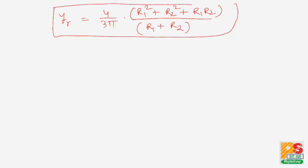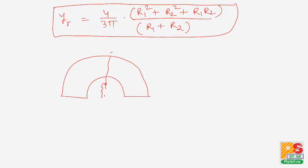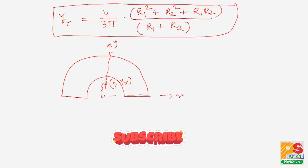That is the answer — the same answer as found in the previous video using the basic method. The center of mass of the annular disk is at coordinates (0, yr). Thank you for watching this video. Please subscribe to my channel Phi Solver.